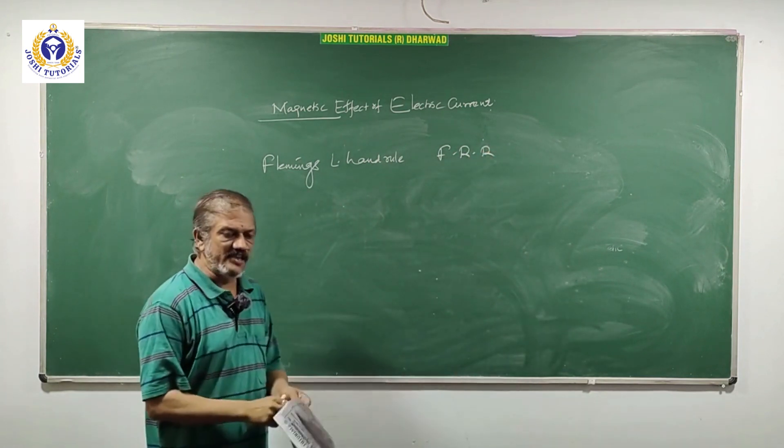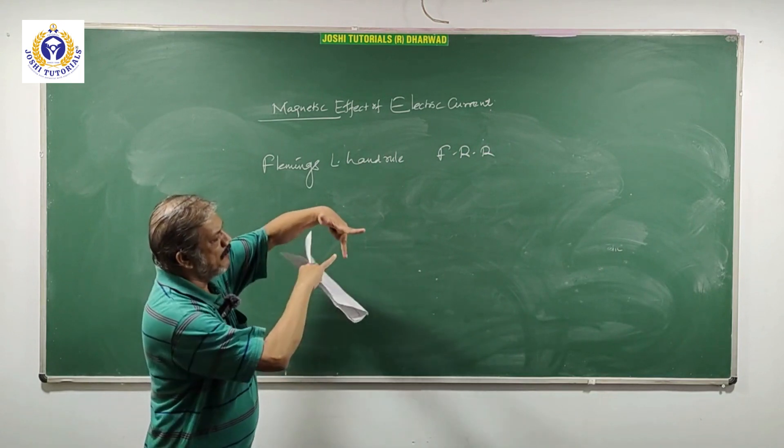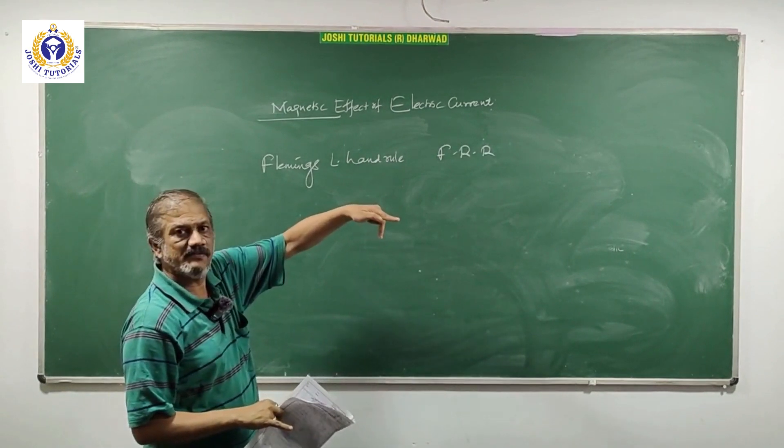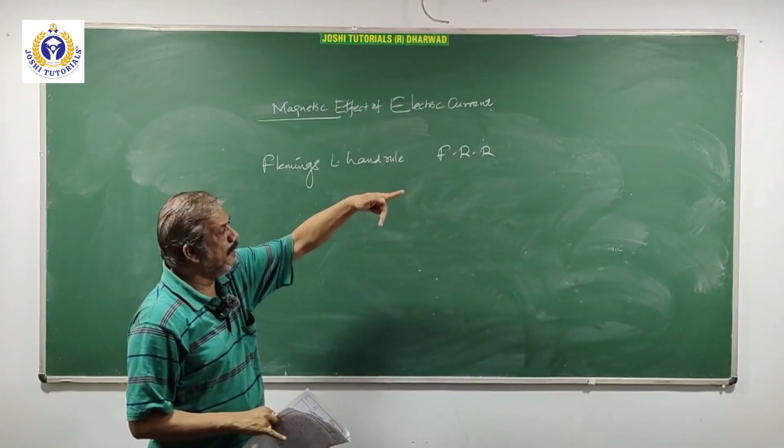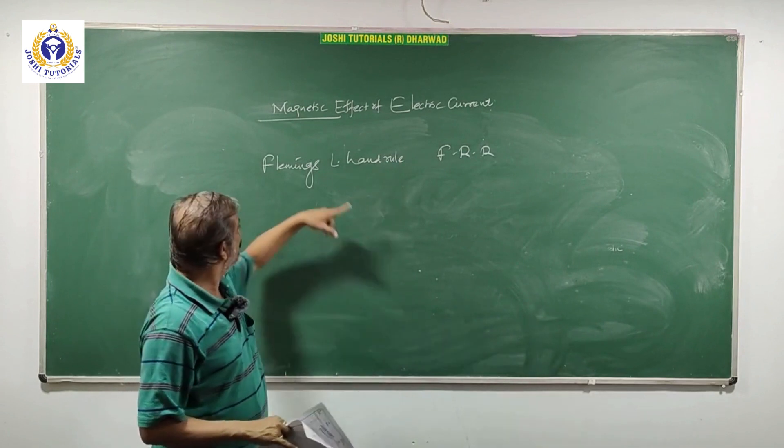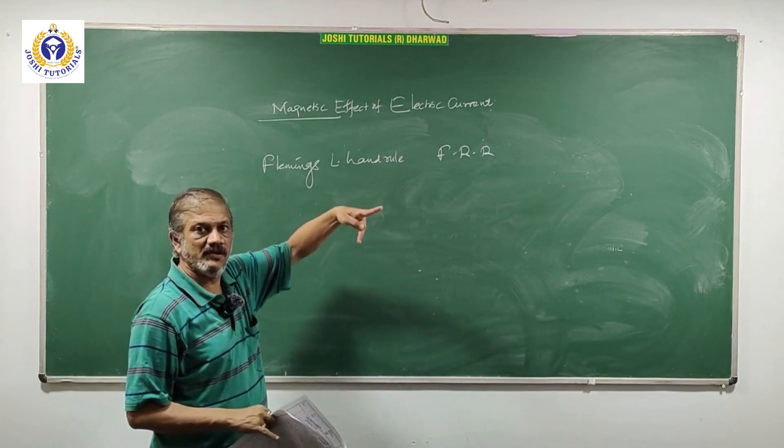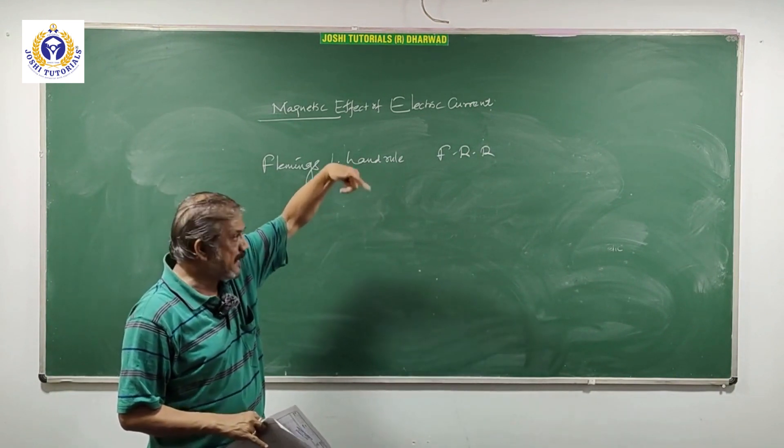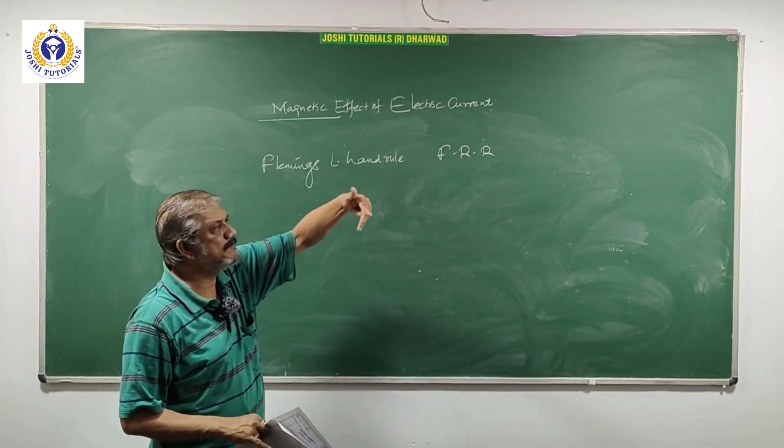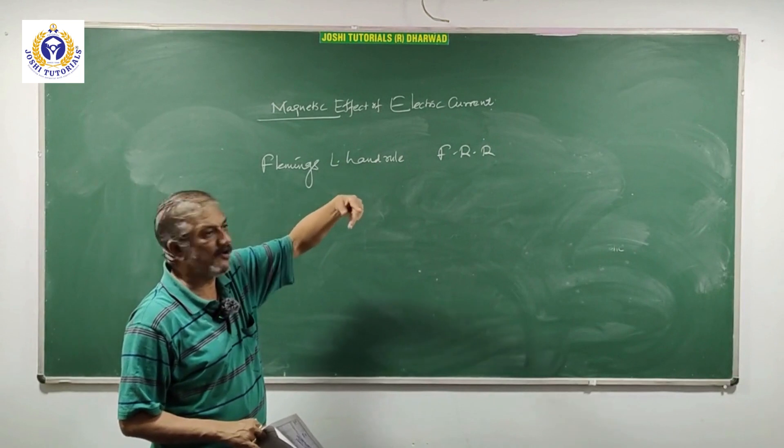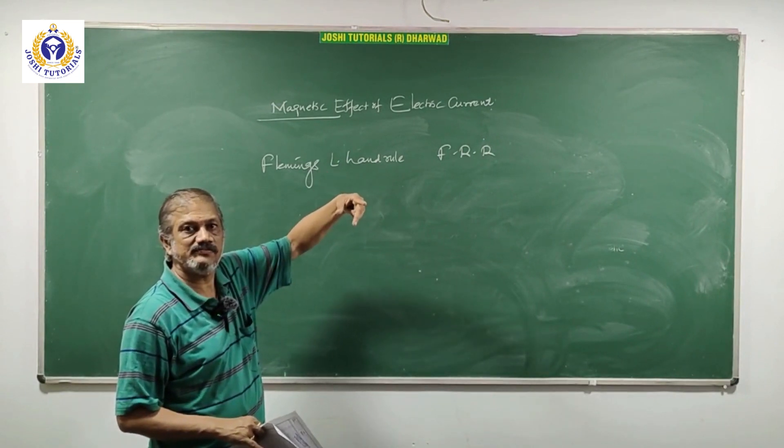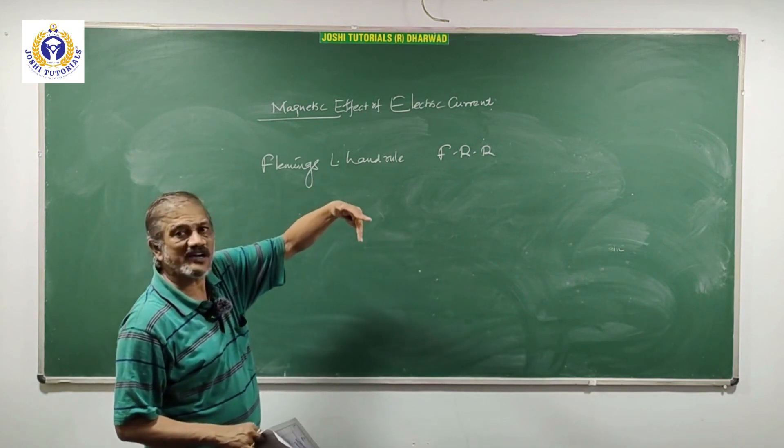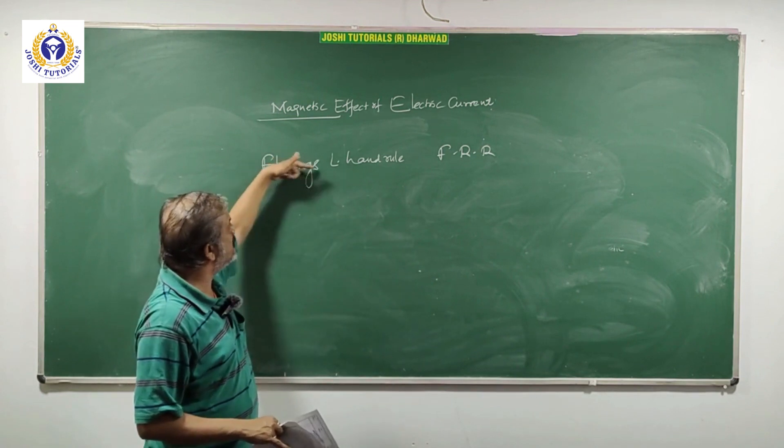Left hand rule is like this: forefinger, middle finger and thumb. Forefinger is field, F. Middle finger is electric current, left hand. You know motor uses left hand rule. Pumpset uses left hand rule. Electric current is passed, it starts moving. Force acts on the conductor. Because when you pass the current, a force acts on the conductor, mechanical force. That's why it's called Fleming's left hand rule.